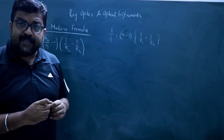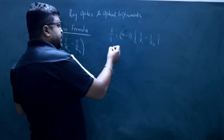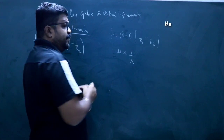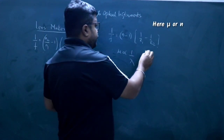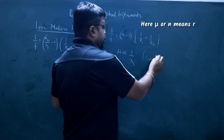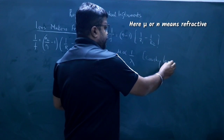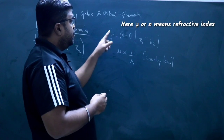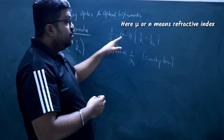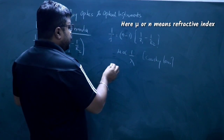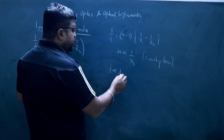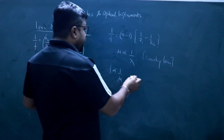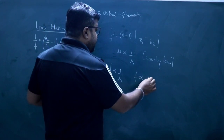Here n is the refractive index of the lens. Now we know that the refractive index is inversely proportional to wavelength lambda (Cauchy's relation). The focal length from the formula means that focal length is inversely proportional to refractive index, and refractive index is inversely proportional to wavelength. So what does this mean? Focal length is directly proportional to wavelength.